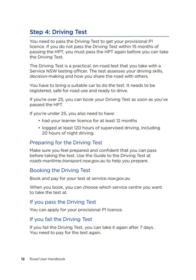Step 4: Driving Test. You need to pass the driving test to get your provisional P1 licence. If you do not pass the driving test within 15 months of passing the HPT, you must pass the HPT again before you can take the driving test. The driving test is a practical, on-road test that you take with a Service NSW Testing Officer. The test assesses your driving skills, decision making, and how you share the road with others. You have to bring a suitable car — it needs to be registered, safe for road use, and ready to drive. If you're over 25, you can book your driving test as soon as you've passed the HPT. If you're under 25, you also need to have had your learner licence for at least 12 months and logged at least 120 hours of supervised driving, including 20 hours of night driving.